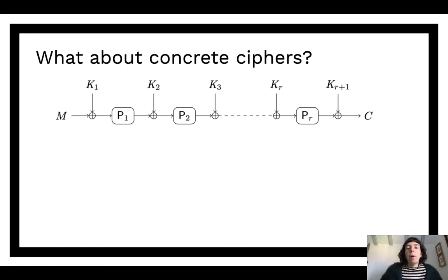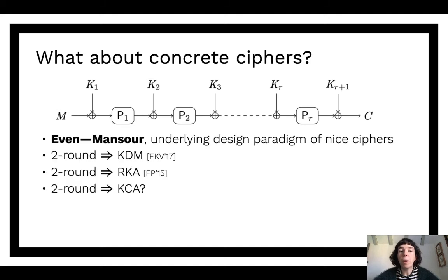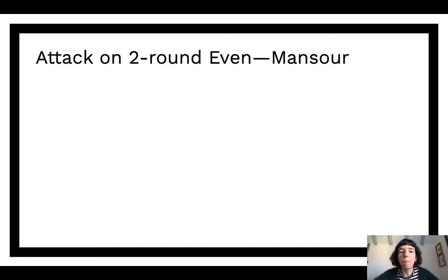The next question turns to concrete ciphers. Several works looked at the Even-Mansour cipher because it is nice to study. It was shown that two rounds were sufficient to achieve KDM security, and two rounds were sufficient to achieve RKA security. So the natural question is whether two rounds are sufficient for KCA security. Unfortunately the answer turns out to be no — there is an attack on two-round Even-Mansour in the KCA setting.